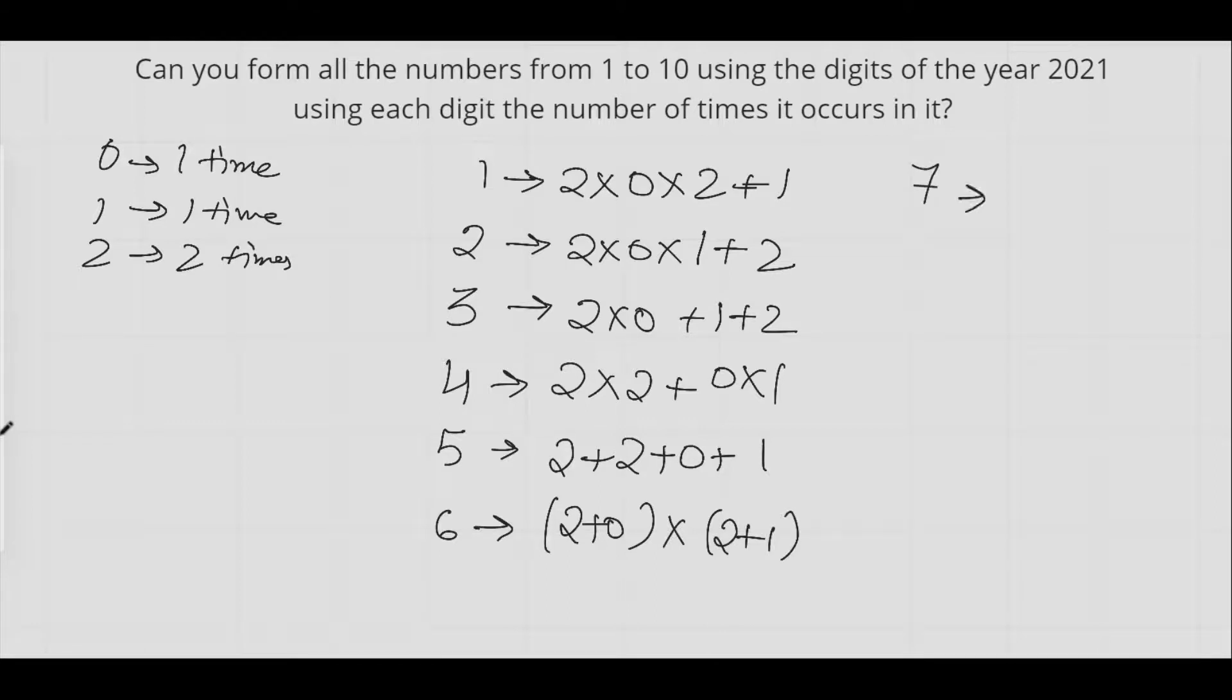Let's try seven now. For seven, we can use the factorial function: 2×(2+1), this is six, plus zero factorial. Zero factorial equals one. Let's try eight.